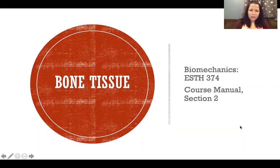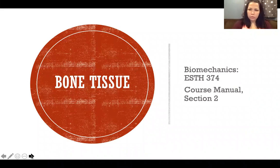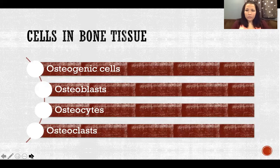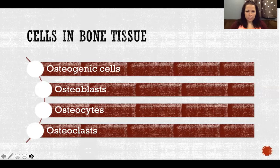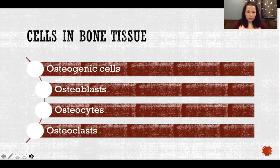In this video we're going to talk about bone tissue. A tissue, if you remember from your anatomy class, is a collection of cells, usually with a common embryonic origin, that are working together towards a common goal. An organ is a collection of two or more different tissues that form a structure working towards a common goal. Bone tissue is one of several tissues that make up a bone organ, and that's what we're focusing on here.